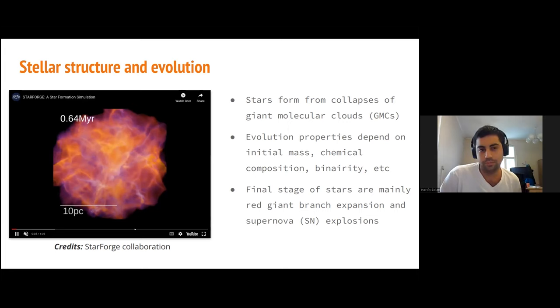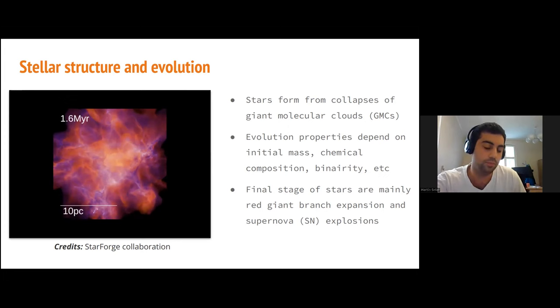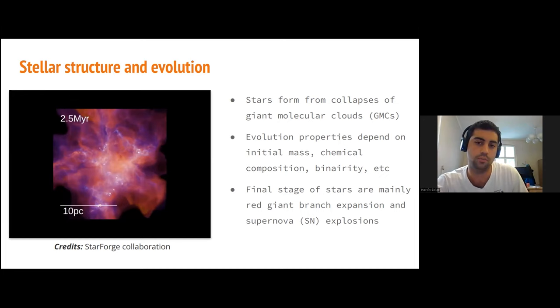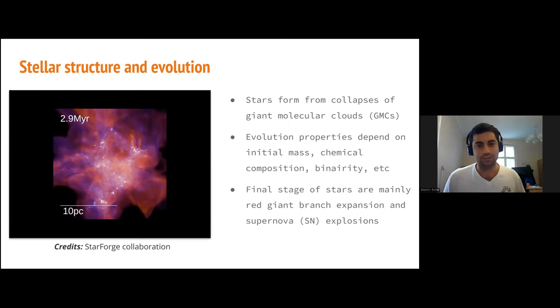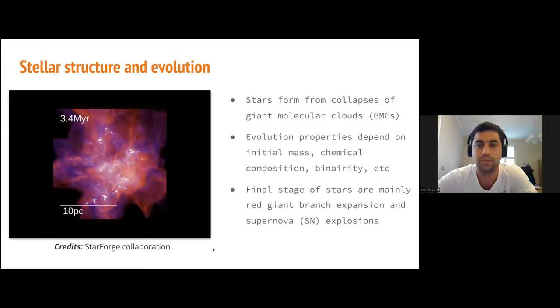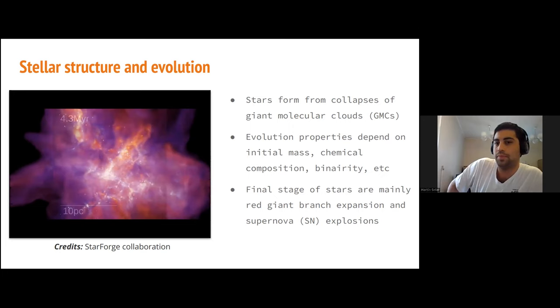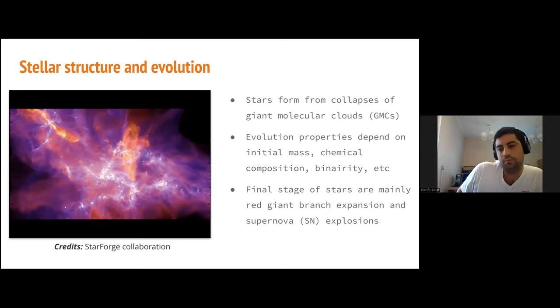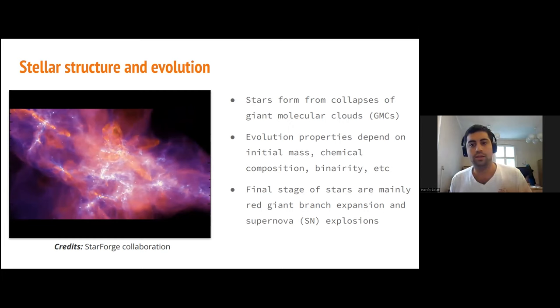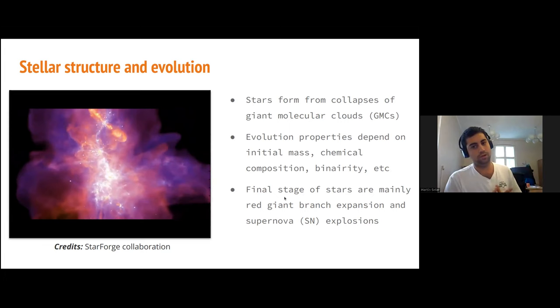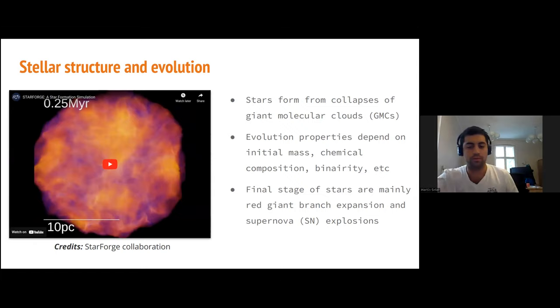We all know that the universe and specifically stars are not static objects. They form, evolve, and die. They form from gravitational collapse of giant molecular clouds. Evolution properties and the track in the Hertzsprung-Russell diagram are defined mainly by initial mass and other parameters like chemical composition and binarity. The final stage of stars can be broadly defined as red giant expansion or supernova explosions, which I want to focus on in this talk.